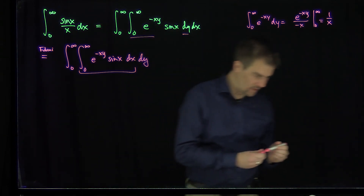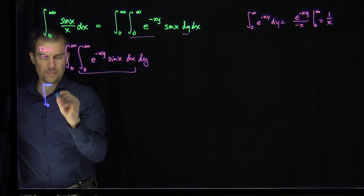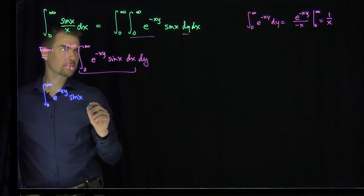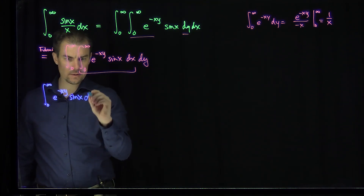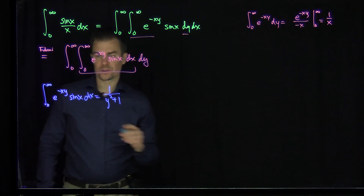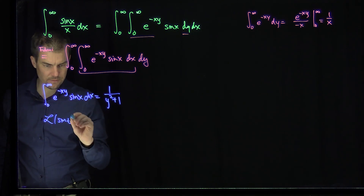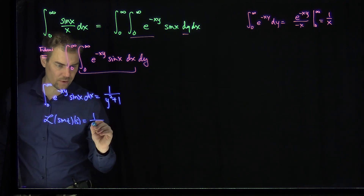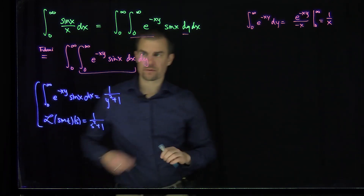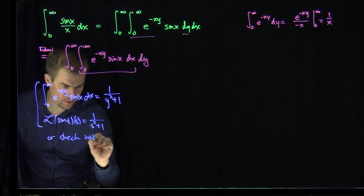In fact, we can recall that these integrals are just Laplace transforms. The integral from zero to infinity of e to the negative xy sine x dx is going to be one over y squared plus one. This follows from the fact that the Laplace transform of sine of t as a function of s is equal to one over s squared plus one. You can also verify this by integration by parts.